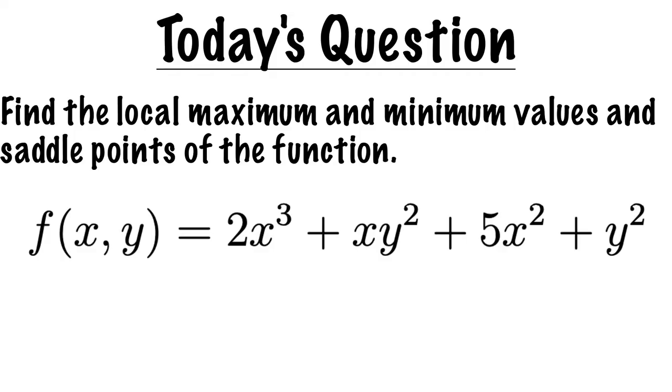The question we're working on today is, find the local maximum and minimum values, and saddle points of the function f(x,y) equals 2x³ + xy² + 5x² + y². Smash that like button and let's get started.